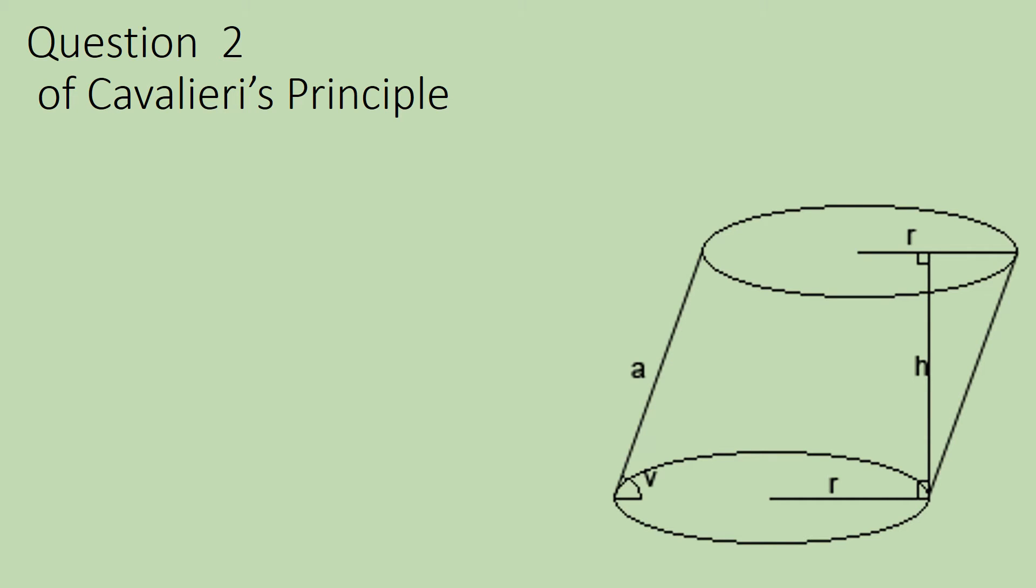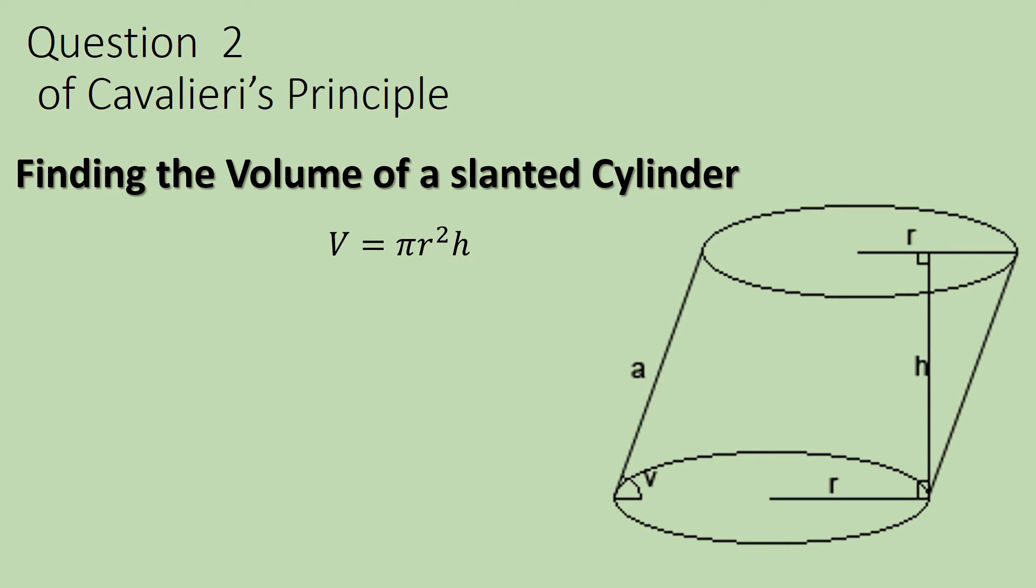So let's look at this. Let's go get our formula. Find the volume of the slanted cylinder. There's the formula. What do we know? It is not labeled.